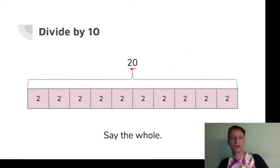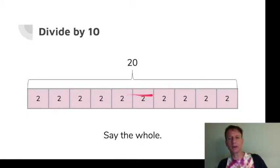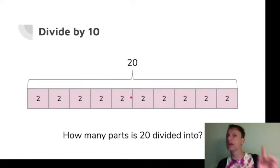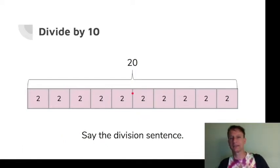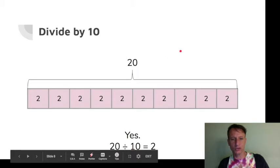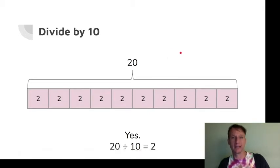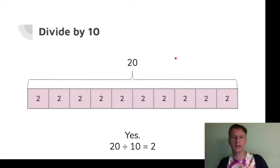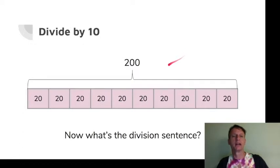When I say 'say the whole' — look right here. The whole tape measure has a value of 20, and I've divided it into 10 parts. So how do I express that as division? Let's look at this first one together. I'm taking 20, dividing it into 10 parts, and there are two in each part — so 20 divided by 10 equals 2.